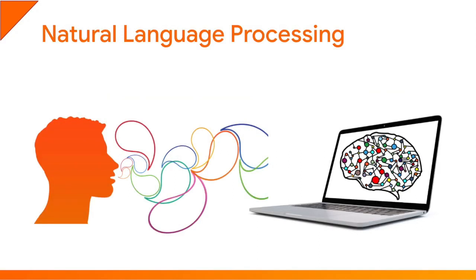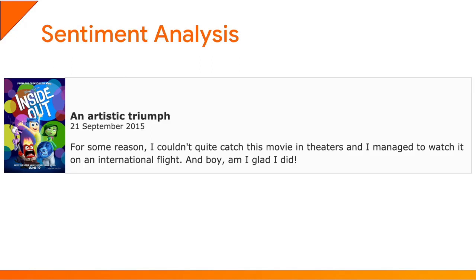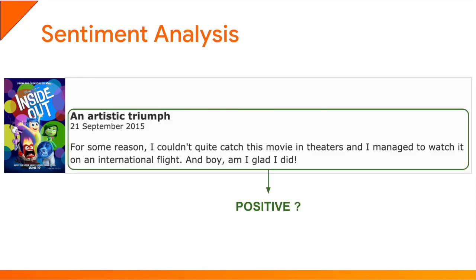Natural language processing is a fairly broad field of research and engineering, which tries to give computers the ability to process spoken or written language, or generate text — for example, to answer questions using natural language. One example is sentiment analysis. Here's a review someone wrote about the movie Inside Out on the Internet Movie Database. Reading this review, even just the title — An Artistic Triumph — it's pretty clear that it's a positive review. In fact, the author rated the movie 9 stars out of 10. If we get thousands of reviews from the IMDB website, we can train a neural network to predict whether a review is positive or negative just based on the text, using the number of stars as the label during training. Such a model could be useful to automatically gather sentiments about a movie across all internet comments and blogs, not just on specialized websites.